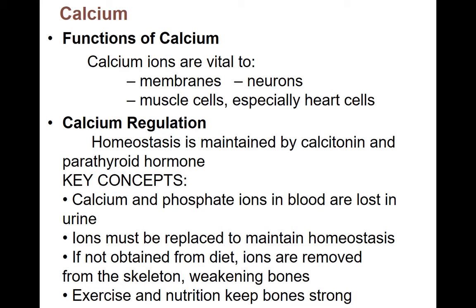Calcium has many functions beyond bone health. Calcium is needed for cell membranes, neurons need calcium to create concentration gradients, and muscle cells need calcium to contract — including heart cells since the heart is a type of muscle. So we need calcium in our diet not just to make bones strong, but for many other cells in our body as well. We also lose calcium continuously in blood and urine, so we need to replace it through diet.